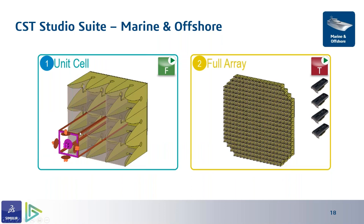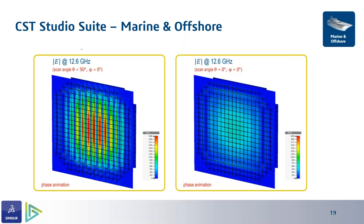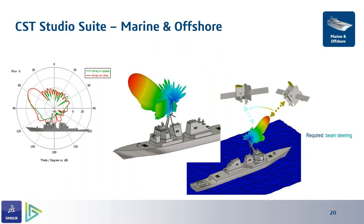The element array is analyzed with the frequency domain solver to see performance of individual elements, then automatically calculated across the full array using the transient solver — which is scalable with GPUs for large arrays. Results show phase animations at angles such as theta equals 50 and zeta equals zero. The asymptotic solver then gives the full far-field analysis of the ship's antennas toward satellites, providing accurate simulation of antenna performance under operation.